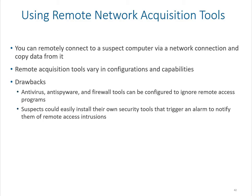The first category is remote network acquisition tools. These tools can provide stealth mode access to a suspect's computer. There are lots of reasons for this — primarily, we don't want to inform the suspect that we are conducting an investigation on their machines or server. We want to ensure the data is not altered, because if the person is aware of the investigation, they might try to delete data or tools installed on those machines.